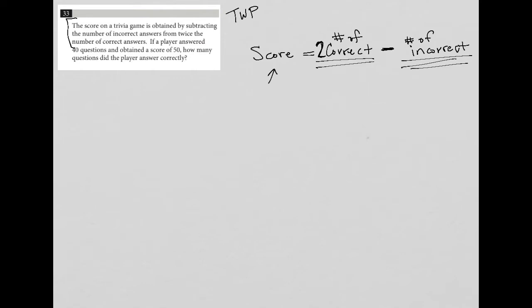The next part says if a player answered 40 questions and obtained a score of 50, the score can now be replaced with 50. But we're not sure how many were answered correctly or incorrectly. In fact, the question asks us, how many questions did the player answer correctly?